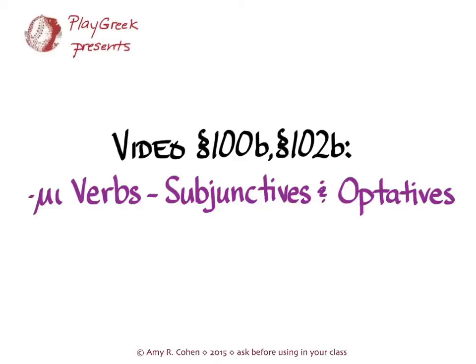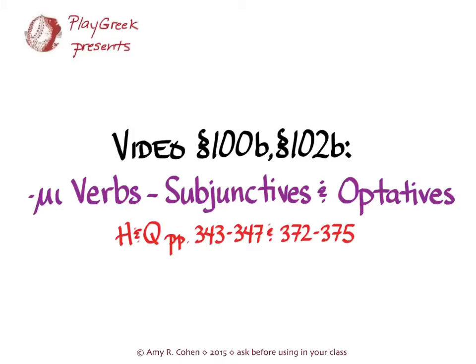Welcome to your second video on mi-verbs. This one will cover subjunctives and optatives of the present and the aorist, and it goes with sections 100 and 102 of Hanson and Quinn, the parts that cover the subjunctive and the optative. You'll find those parts on pages 343, 347, 372, and 375 of Hanson and Quinn.